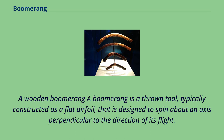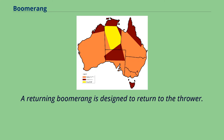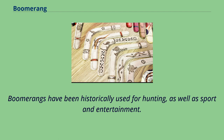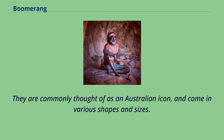A boomerang is a thrown tool, typically constructed as a flat airfoil, that is designed to spin about an axis perpendicular to the direction of its flight. A returning boomerang is designed to return to the thrower. It is well known as a weapon used by some Aboriginal Australian peoples for hunting. Boomerangs have been historically used for hunting, as well as sport and entertainment. They are commonly thought of as an Australian icon, and come in various shapes and sizes.